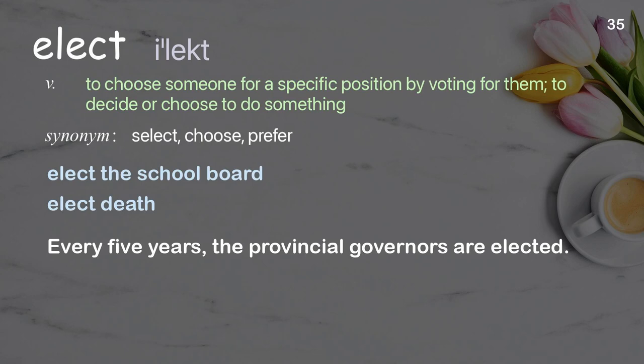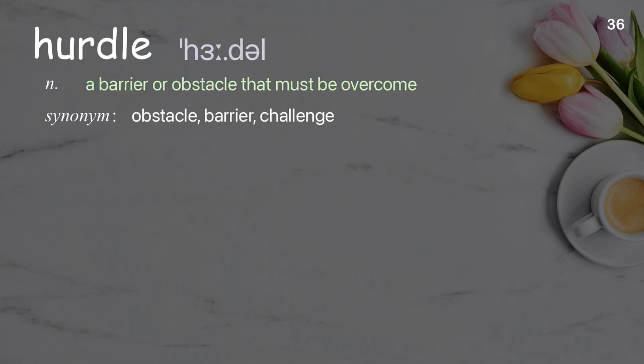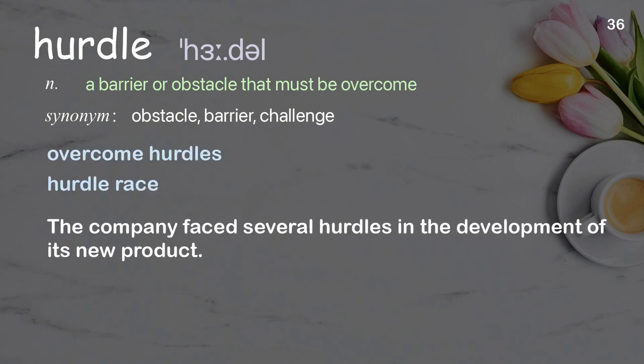Elect: Examples: elect the school board, elect every five years, the provincial governors are elected. Hurdle: a barrier or obstacle that must be overcome. Examples: overcome hurdles, hurdle race. The company faced several hurdles in the development of its new product.